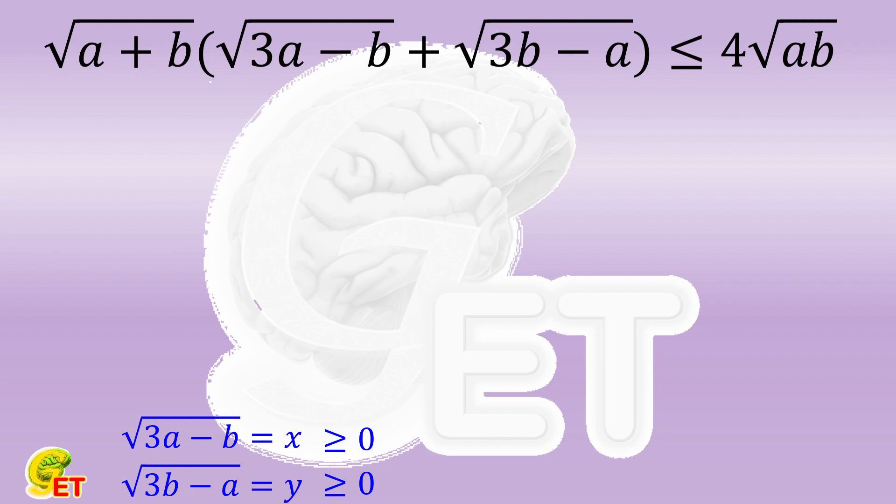We square both equations and get the quadratic linear equations with A and B as the unknowns, from which the expressions for A and B can be easily found.